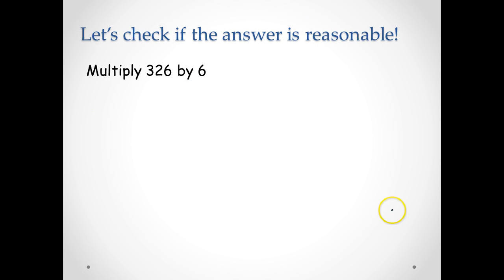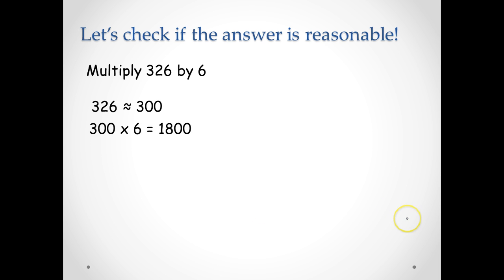Let's check if the answer is reasonable. 326 rounded to the nearest hundred is 300. So 300 times 6 is 1,800. 1,956 is close to 1,800, so we say that the answer is reasonable.